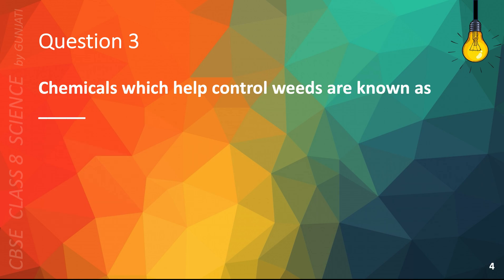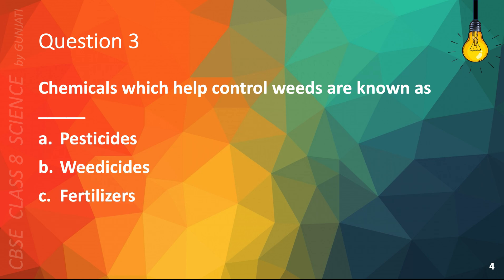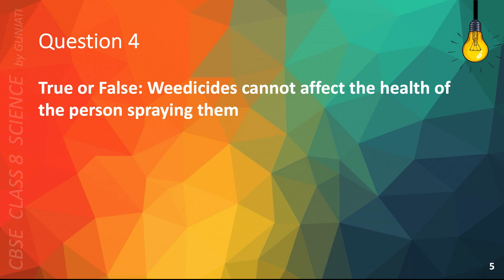Question 3. Chemicals which help control weeds are known as: A. Pesticides, B. Weedicides, C. Fertilizers, or D. None of the above. The correct answer is B. Weedicides.